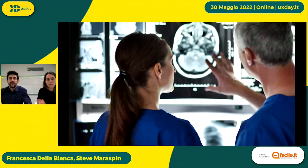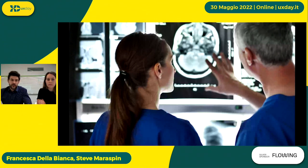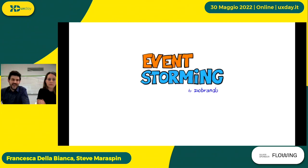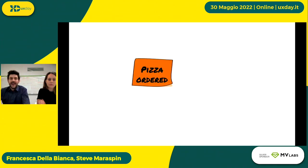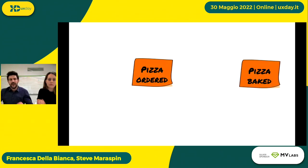L'informatica, soprattutto negli ultimi tempi, ha fornito anche degli strumenti molto utili quando andiamo a fare una progettazione incentrata sugli utenti. Noi utilizziamo una tecnica che si chiama event storming, proposta dall'ingegnere software italiano Alberto Brandolini. Riassumendola in maniera semplice, prevede l'utilizzo di post-it colorati per andare a descrivere quelli che sono gli eventi che succedono in un determinato contesto.